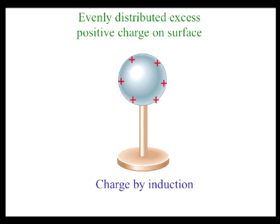The process could also be used to give the sphere a negative net charge if a positively charged rod were used. Then, electrons would be drawn up from the Earth through the grounding wire and onto the sphere.